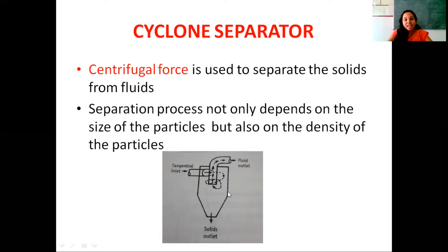This is our cyclone separator. It consists of a short vertical cylindrical vessel with a conical base. Here you can see the conical base, and it consists of a tangential inlet present at the upper part of the separator. The central top portion consists of a fluid outlet, which is for escaping the air.